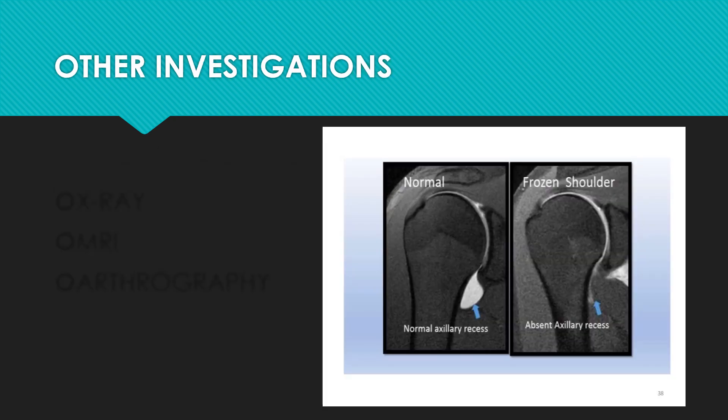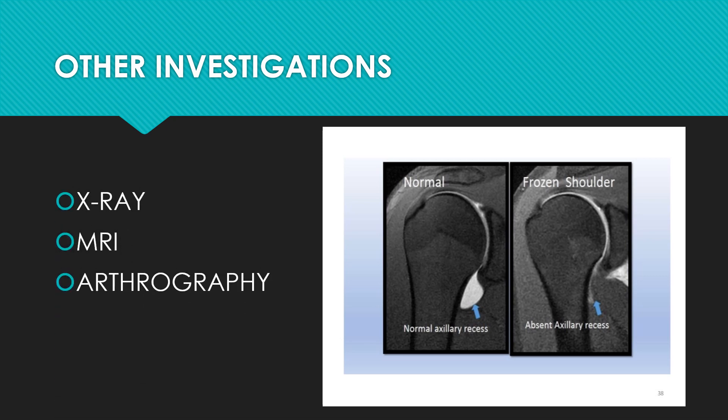Other investigations include X-rays, MRIs, and arthrography. X-rays typically appear normal since frozen shoulder is a capsular condition not visible on X-ray. However, X-rays can reveal secondary conditions causing pain, such as calcification, osteoporosis, or osteoarthritis — any secondary cause contributing to the pain can be identified.